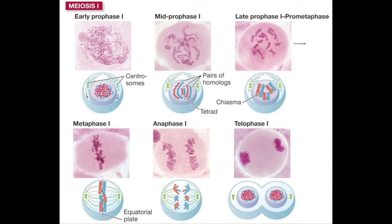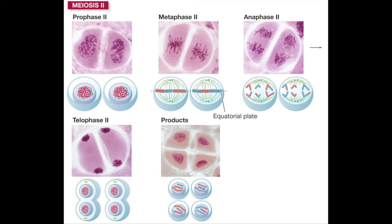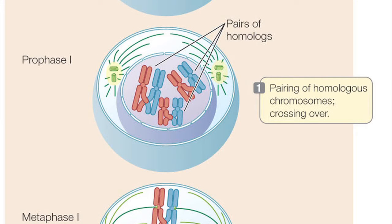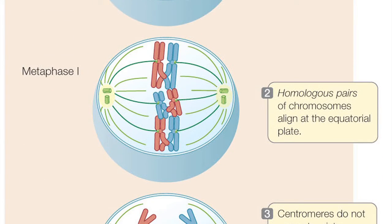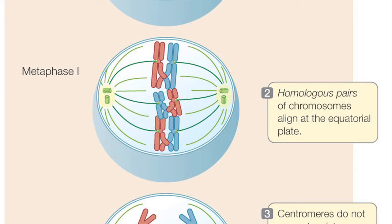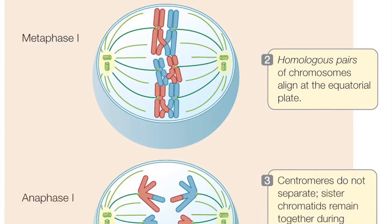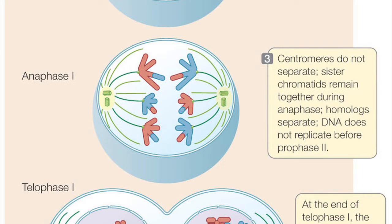The micrographs show meiosis in the male reproductive organ of a lily. The diagrams show the corresponding phases in an animal cell. In prophase I, the pairing of homologous chromosomes and crossing-over occur. The alignment of homologous pairs of chromosomes at the equatorial plate occurs in metaphase I. The centromeres do not separate in anaphase I, as sister chromatids remain together.